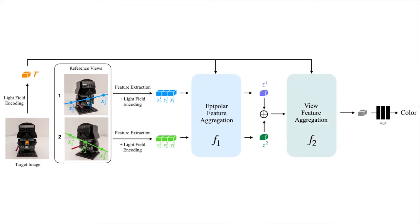These features, along with the target ray encoding, act as input to the view feature aggregator, that outputs a single feature vector from which we predict the color.